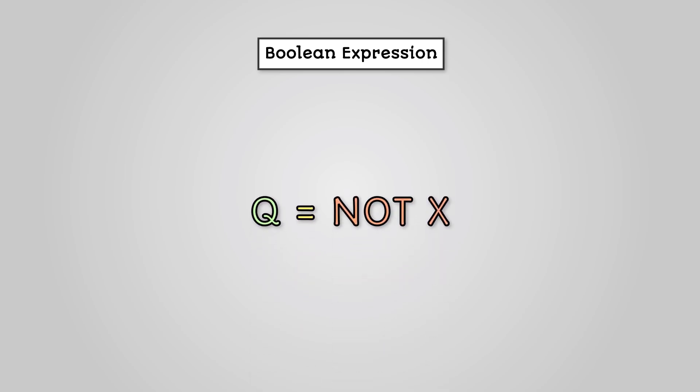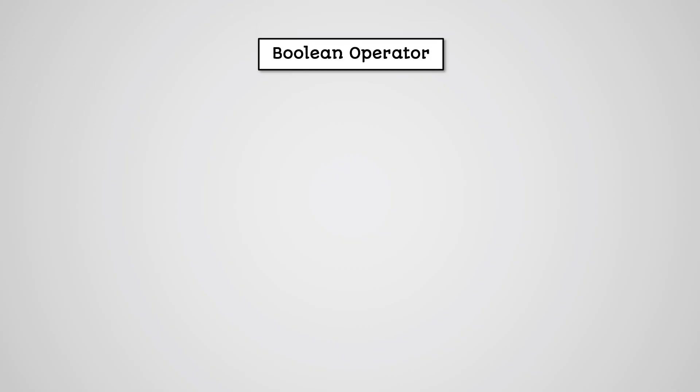We can also express our logic gates using Boolean algebra, where we write down the logic of our gate as a Boolean expression. If we want to write this as a Boolean expression, we can write it as Q equals NOT X. Alternatively, we could use a Boolean expression operator. This uses an overbar to represent a NOT gate, so our Boolean expression written using a Boolean operator would be this.